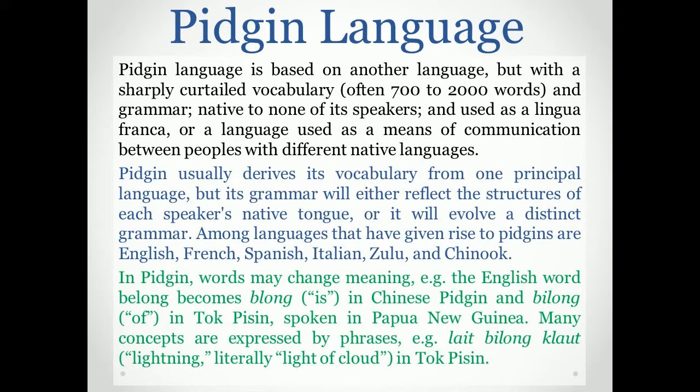In a pidgin, words may change meaning. For example, the English word 'belong' becomes 'belong' meaning 'is' in Chinese Pidgin, and 'belong' meaning 'of' in Tok Pisin, spoken in Papua New Guinea. Many concepts are expressed by phrases — for example, 'gras bilong klaut' meaning 'lightning,' literally 'light of cloud,' in Tok Pisin.